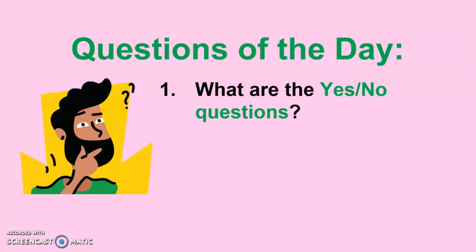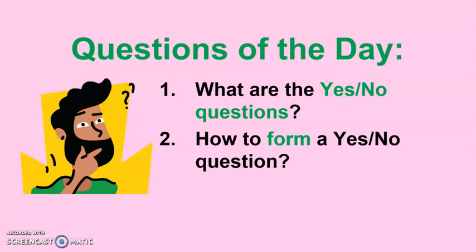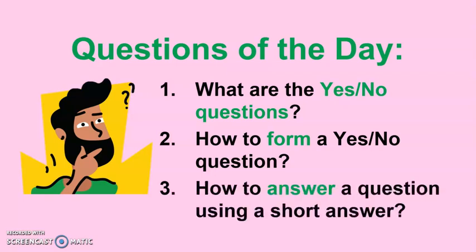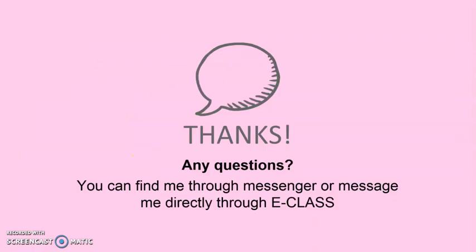To recap: yes/no questions are known as closed questions since there are only two possible responses — yes or no. To form a yes/no question, place the auxiliary verb or modal verb first, followed by the subject, then the rest of the question. To answer using a short answer: use the long form for yes, and use the contracted/short form of the verb for no. That's all for our lesson — this is your teacher, Teacher Joy. Thank you and see you again, bye!